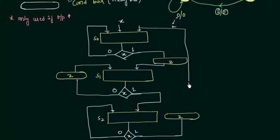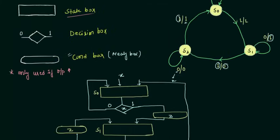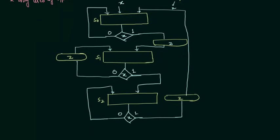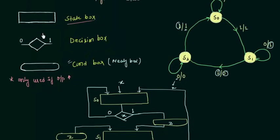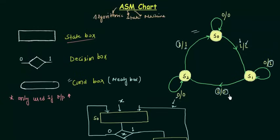This is how the ASM chart for this state diagram looks — it is very simple. The only things you have to remember are the components, when to use each one, and how to read the state diagram to identify inputs and outputs. In this presentation we used a Mealy state machine. Most probably in the next presentation I will do a more complex example using a Moore state machine.